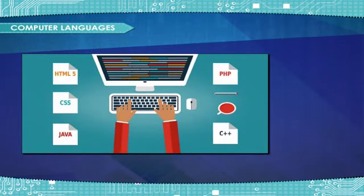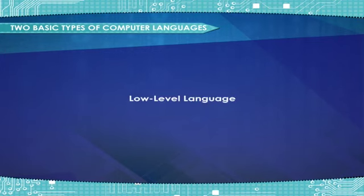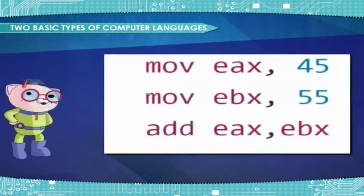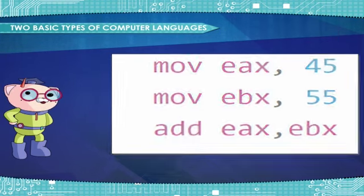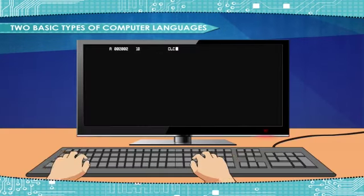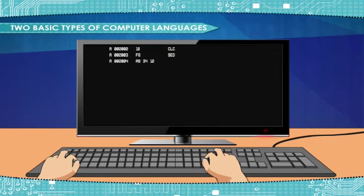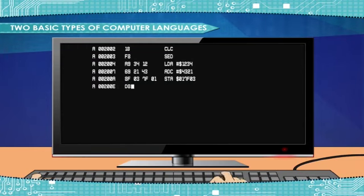Computer languages are basically in two categories: high level language and low level language. Low level language, also called machine language, is a language that is directly understood by the computer. In this language, 0 and 1 binary numbers are used.